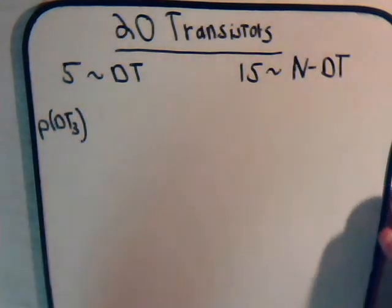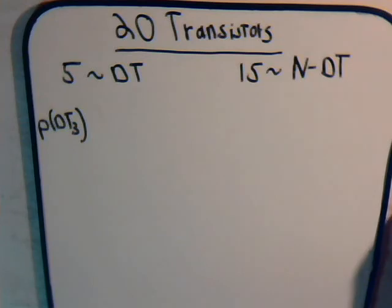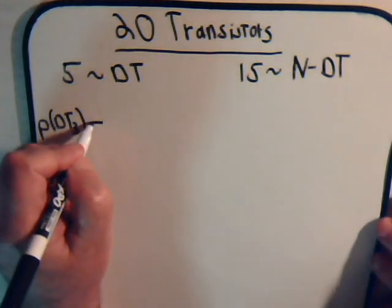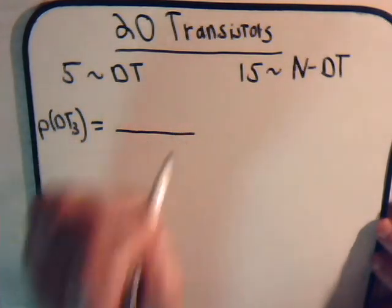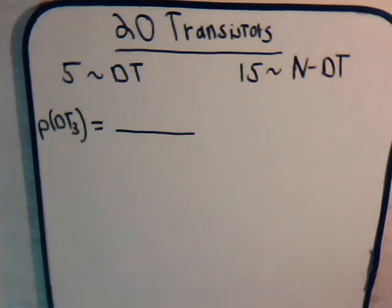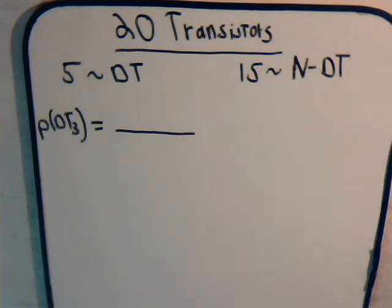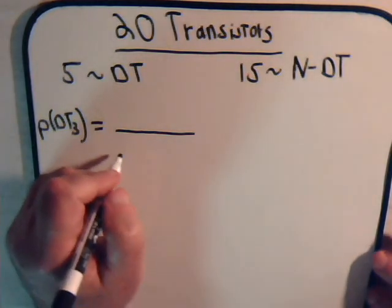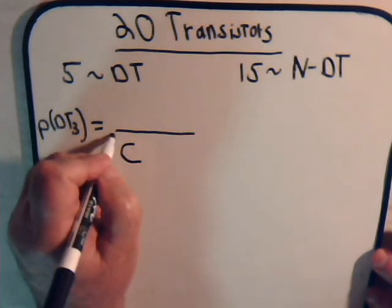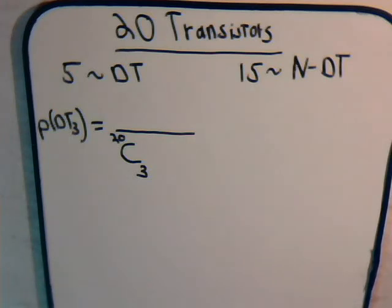What is the probability that all three of the selected transistors are defective? That equals the number of ways we could select three defective transistors divided by the total number of ways we could select three transistors. Since there are twenty transistors total and the order in which we select them doesn't matter, this is a combination problem.